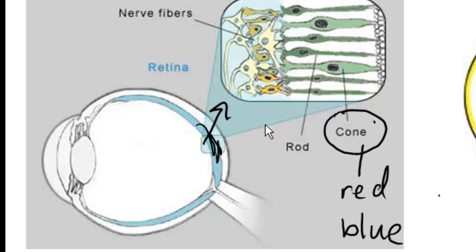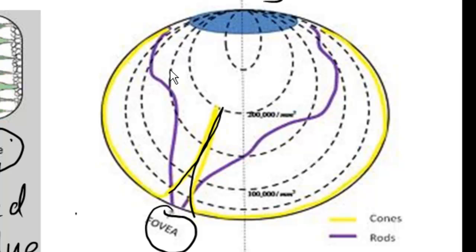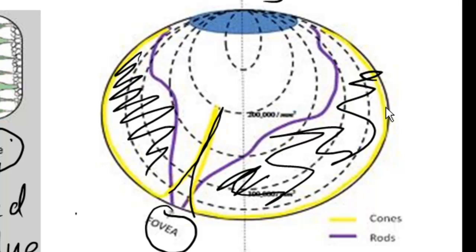So rods, on the other hand, rods help us to see in the dark. So they help us to see like black and white and gray. Rods are highly concentrated everywhere else in the periphery of the retina, and we have a lot more rods like I mentioned.